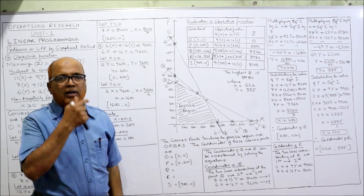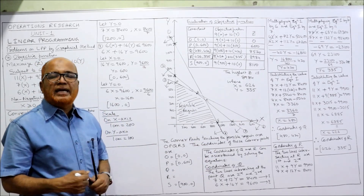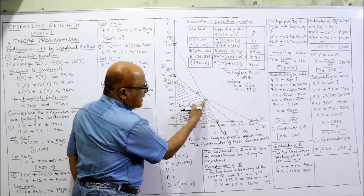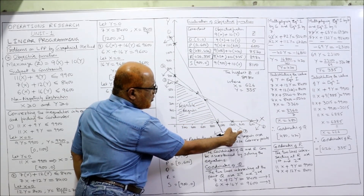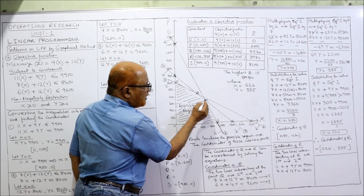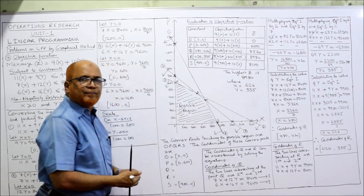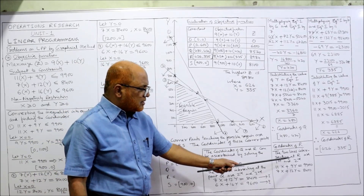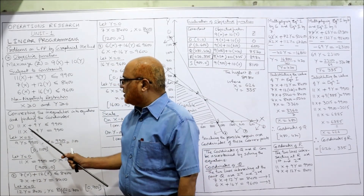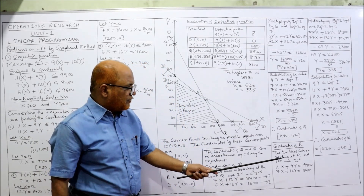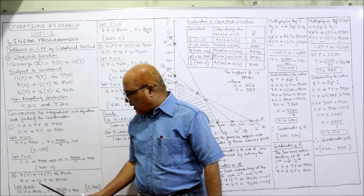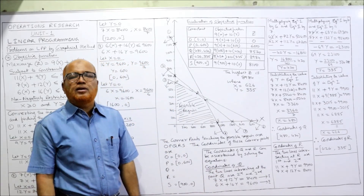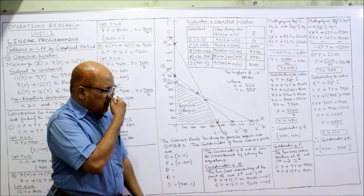Similarly, we calculate the coordinates of R. At point R, the first and second inequalities intersect. First equation: 11x + 9y = 9900. Second equation: 7x + 12y = 8400. To cancel x, multiply the first equation by 7 and the second equation by 11, making the coefficient of x equal to 77 in both.